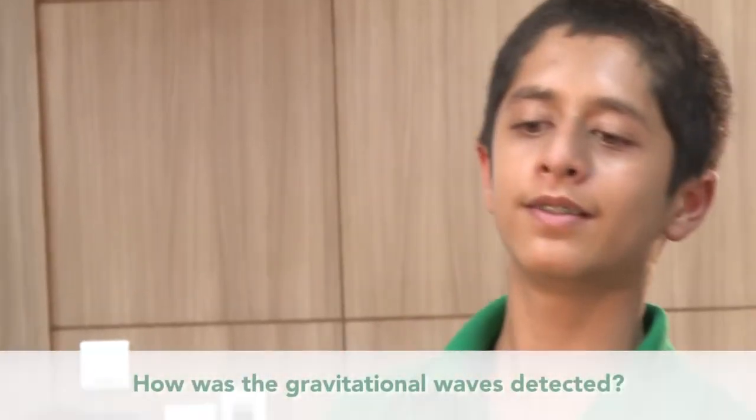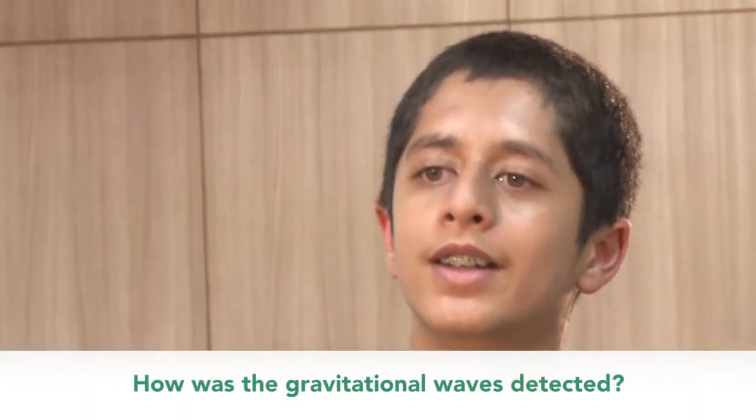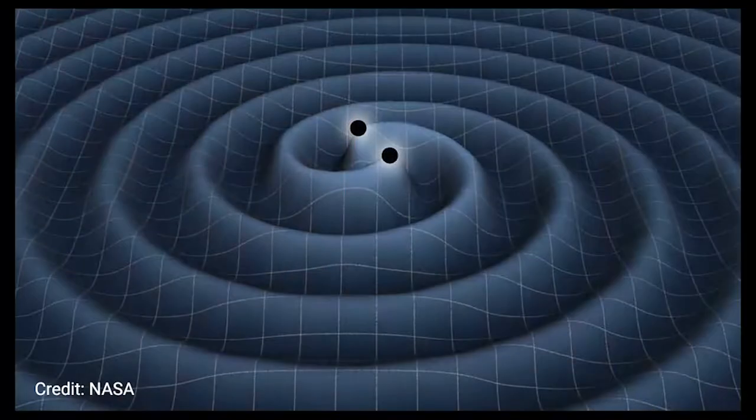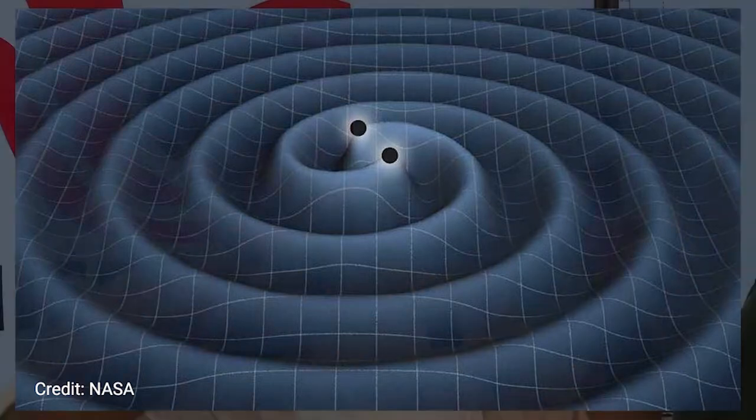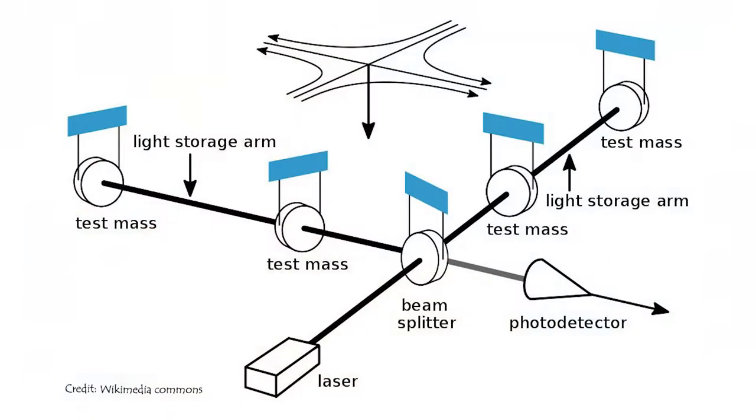What a gravitational wave does is it compresses and expands space. So something that is actually one kilometer keeps on changing — there's an actual change of space itself. Have you heard of something called the interference experiment?